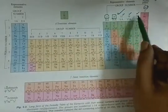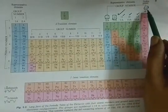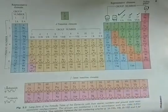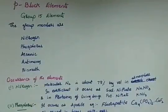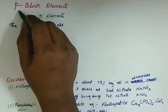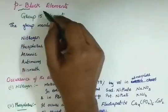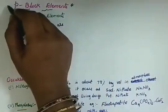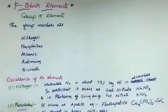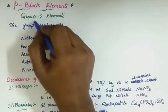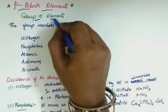So groups 15, 16, 17, and 18 are what we are going to read in this chapter. First we will be discussing about the 15th group elements — the P-Block group 15 elements.